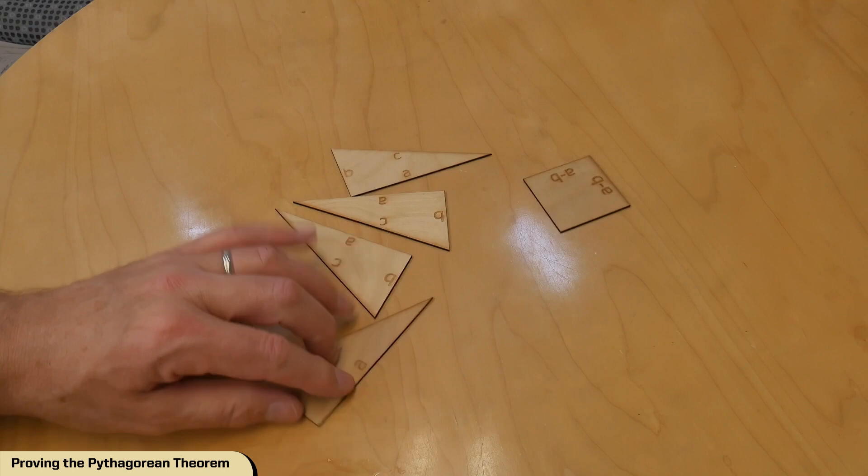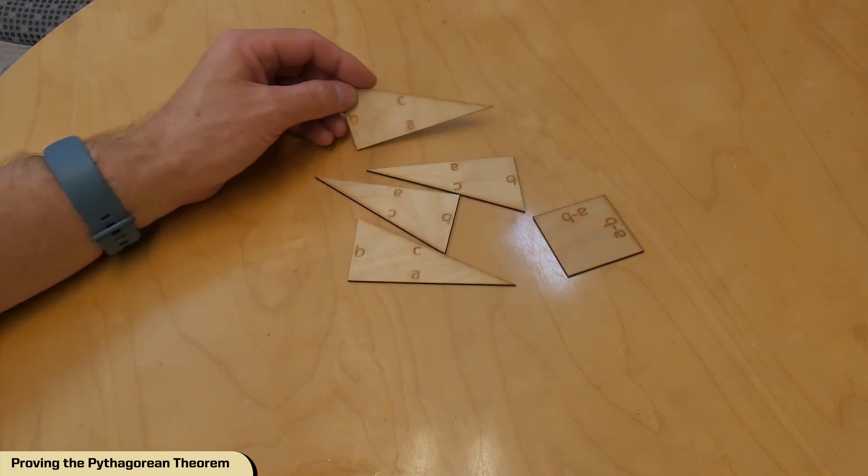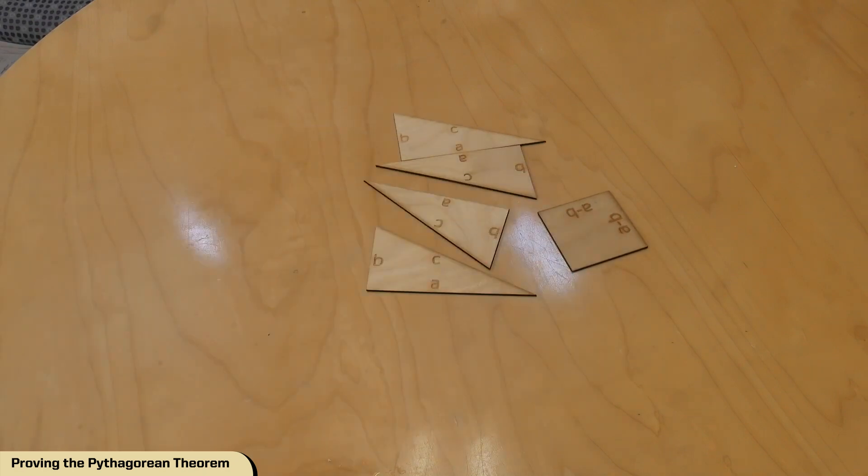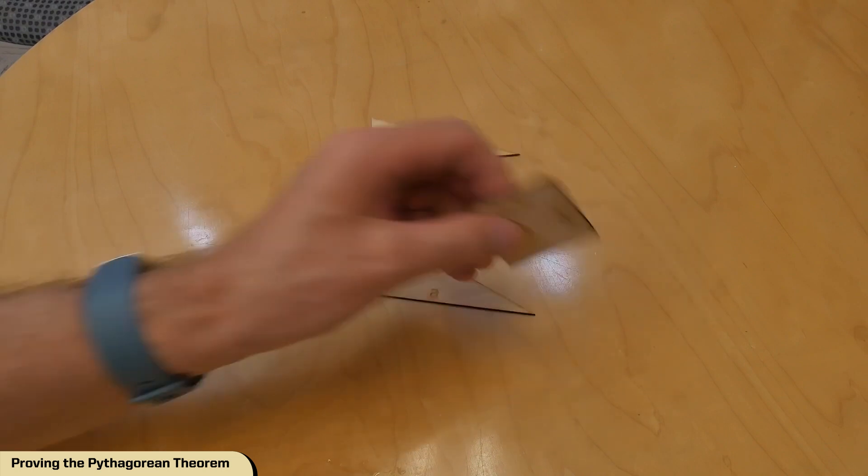What I've got here are four little triangles cut out of thin plywood. It's actually aircraft-grade plywood, and I lasered these out on a CNC laser. And this is a little square.